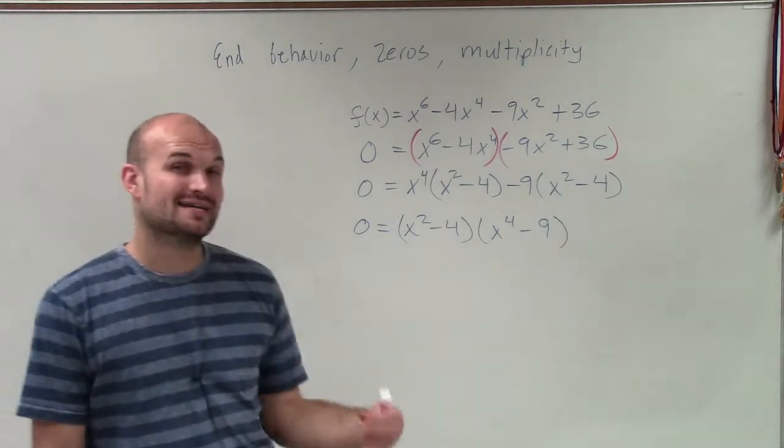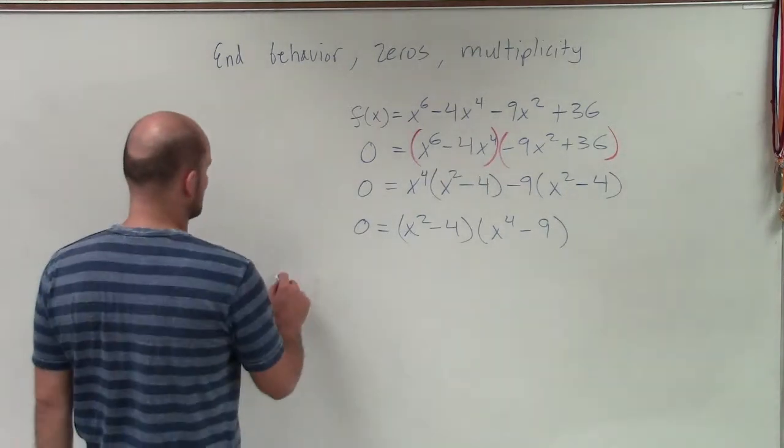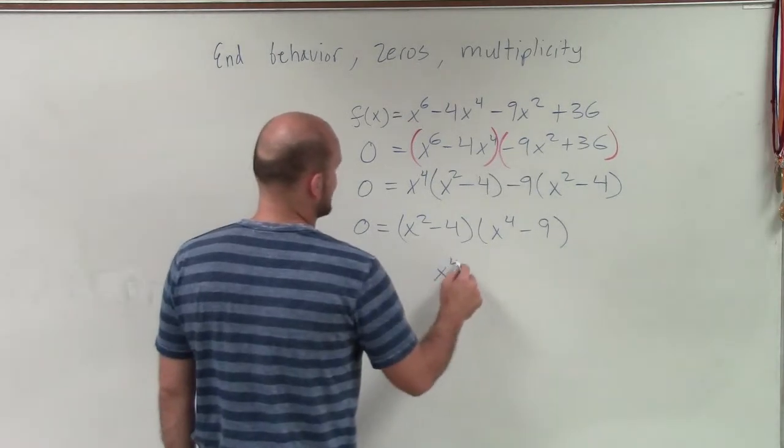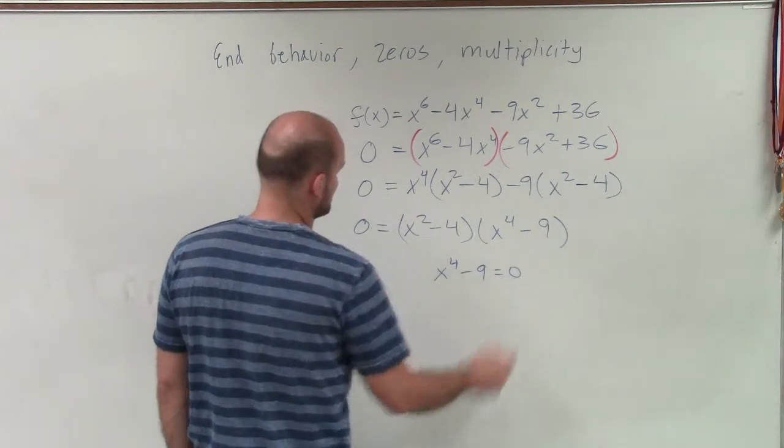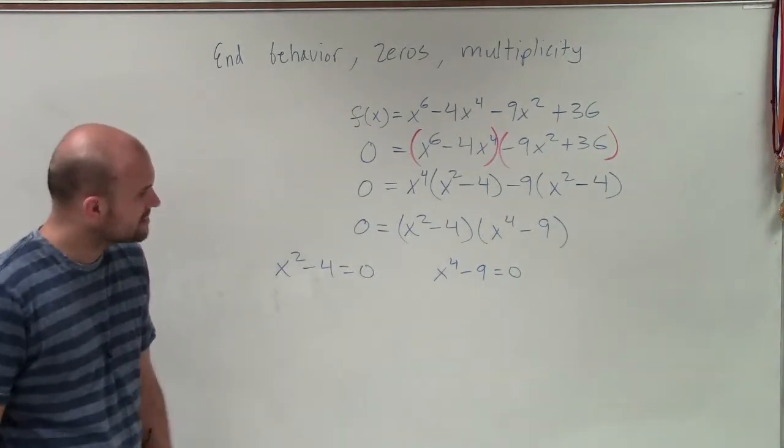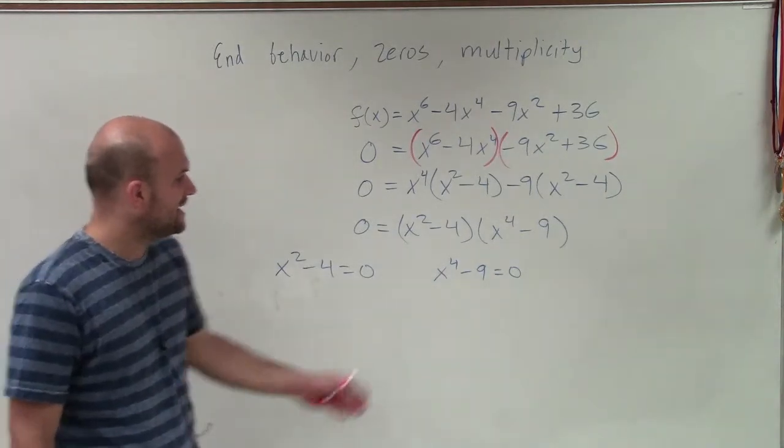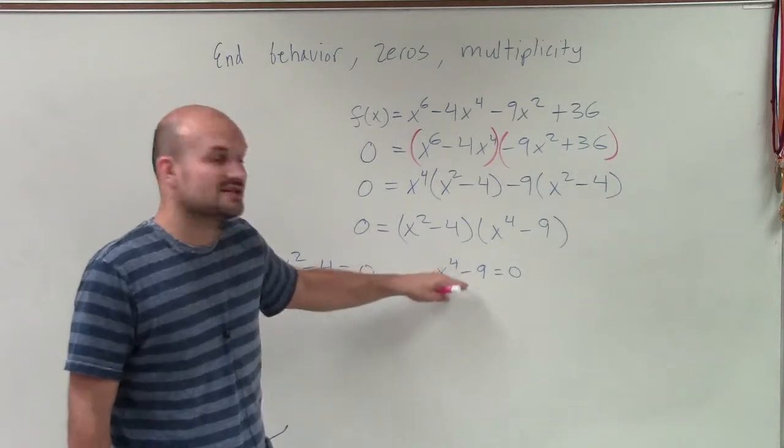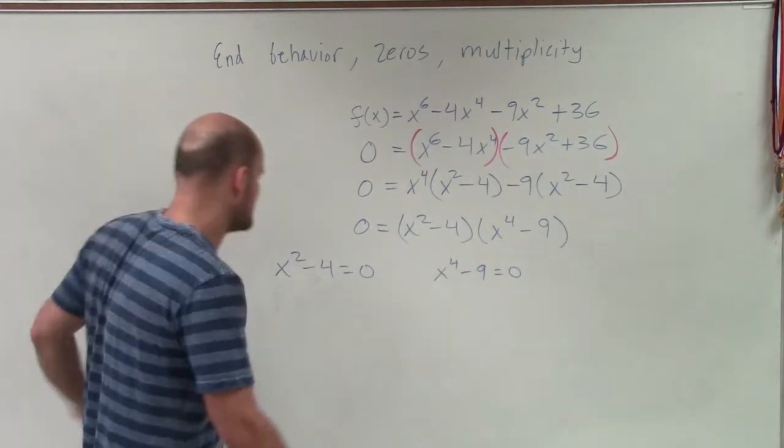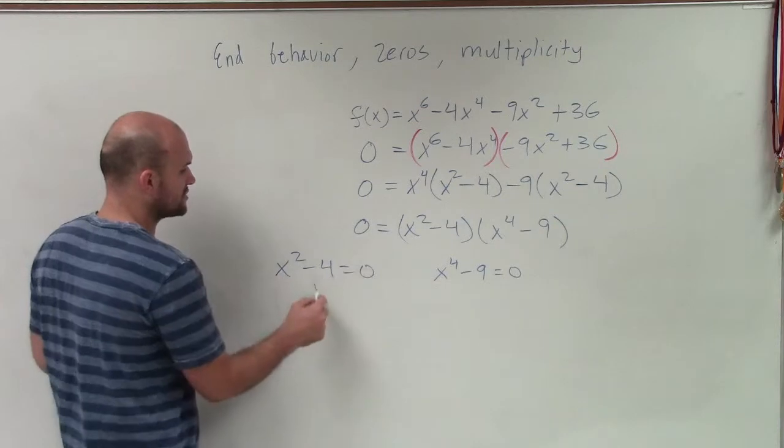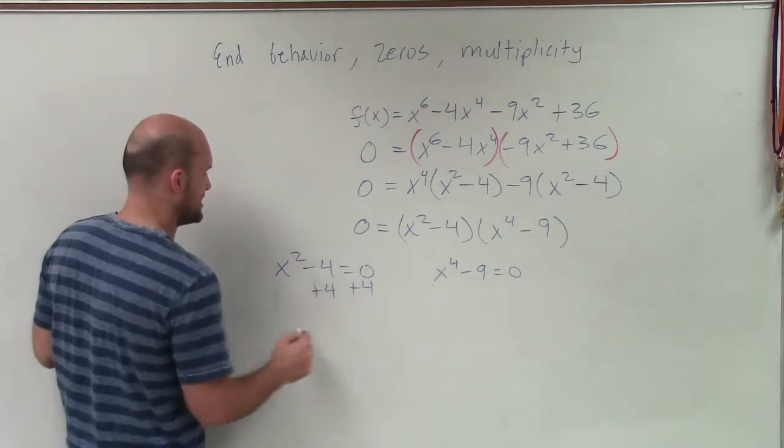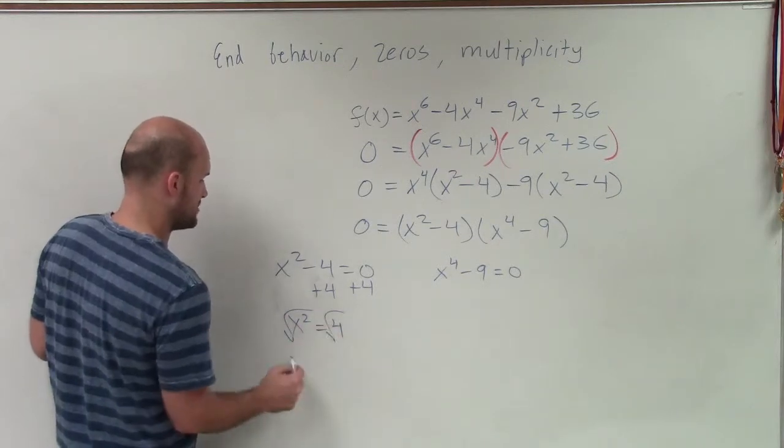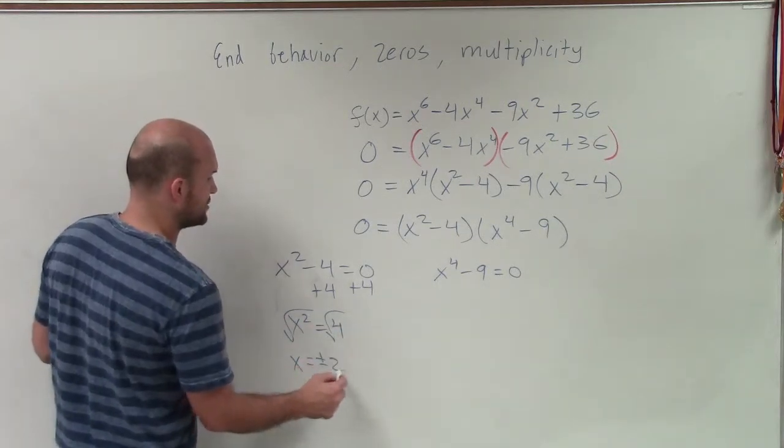Now I have a product equal to 0, so now I can apply the zero product property. So I can say x² - 4 = 0 and x⁴ - 9 = 0. Now I can still factor this out. I can break this up even further. I notice that this is a difference of two squares. I'll add 4 to both sides, I get x² = 4. Take the square root. x = ±2.